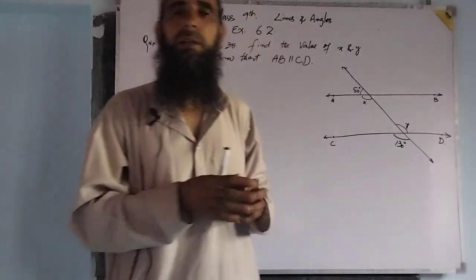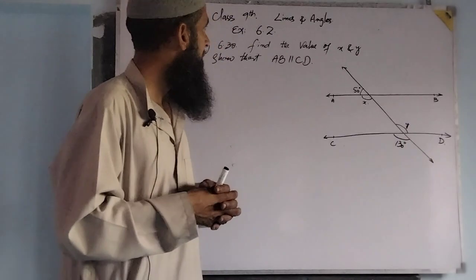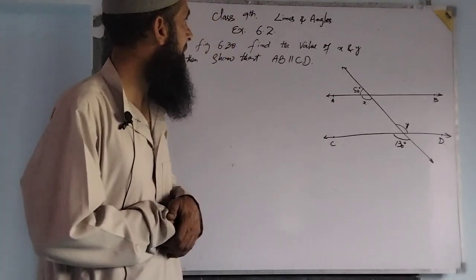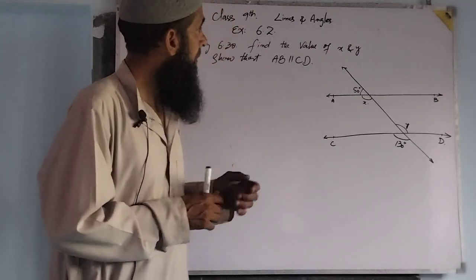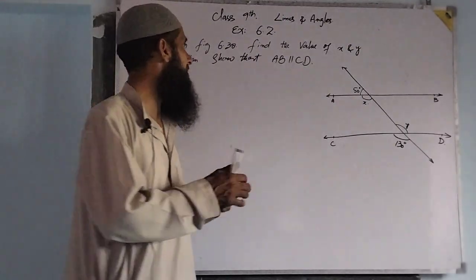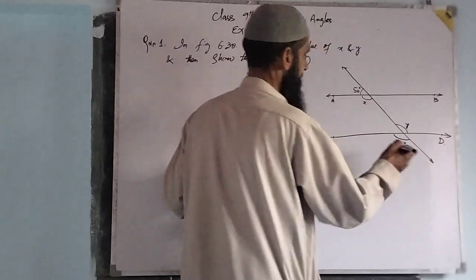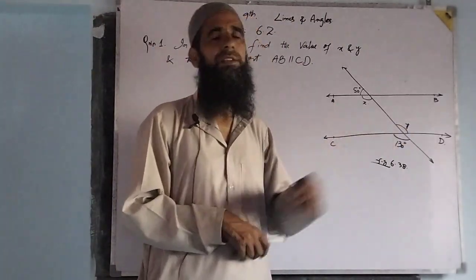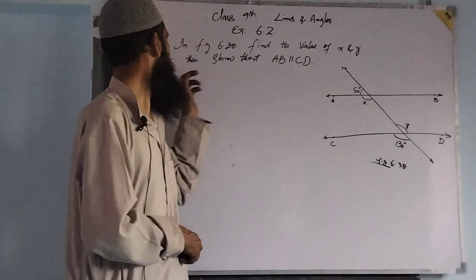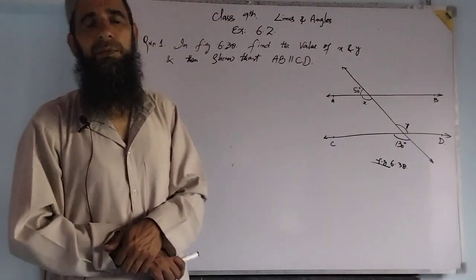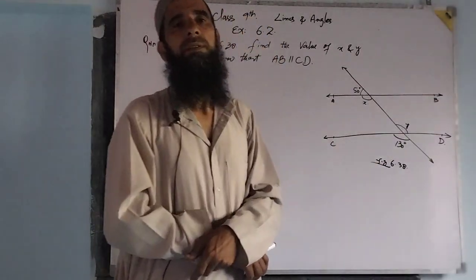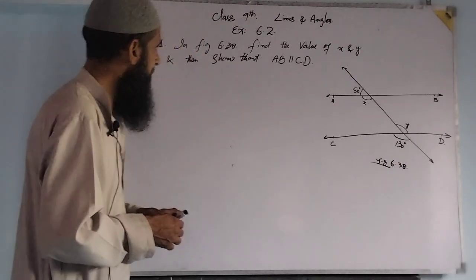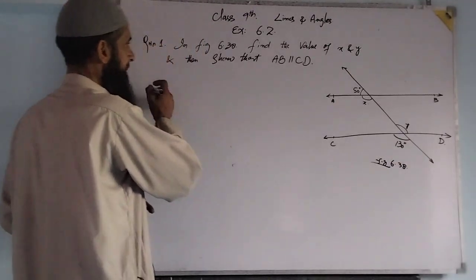Dear students, today we will discuss one question from exercise 6.2, question number one, from the same chapter. In this figure 6.38, we have to find the value of x and y, and then show that AB is parallel to CD. It is a simple question and we can simplify it in multiple ways.